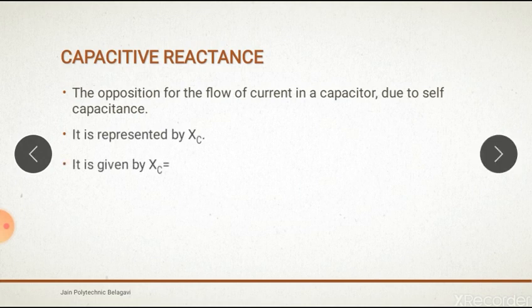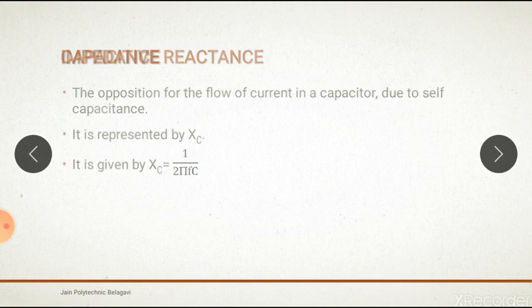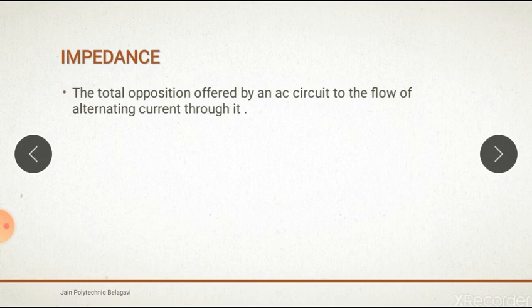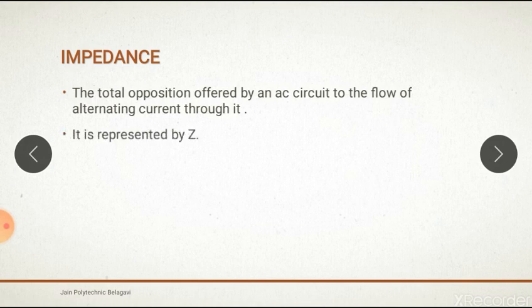It is given by XC = 1/(2πFC). Impedance: the total opposition offered by an AC circuit to the flow of alternating current through it. It is represented by Z and is measured in Ohms.